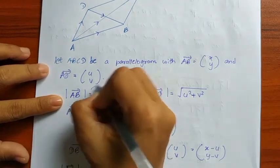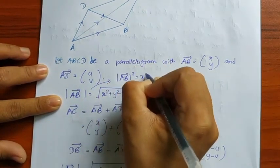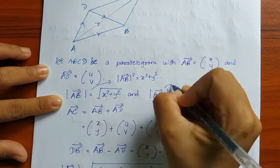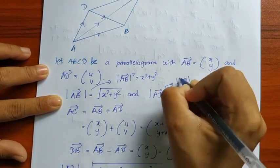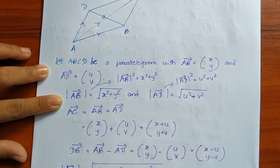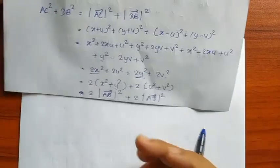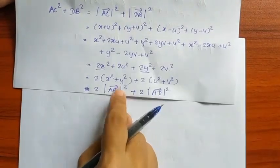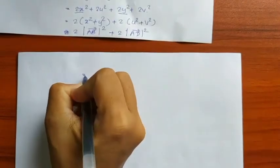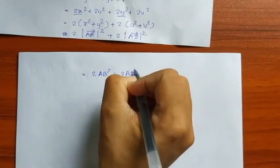Here we can see A squared plus Y squared, and the modulus of vector AD squared is U squared plus V squared. So the result is that the sum of squares of the diagonals equals 2 times modulus of AB squared plus 2 times modulus of AD squared.